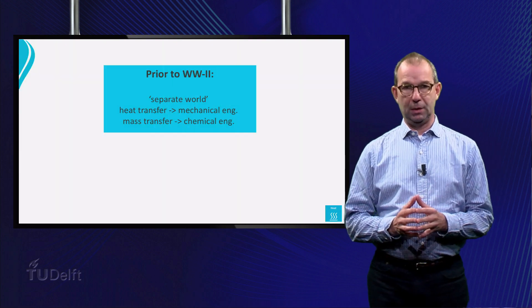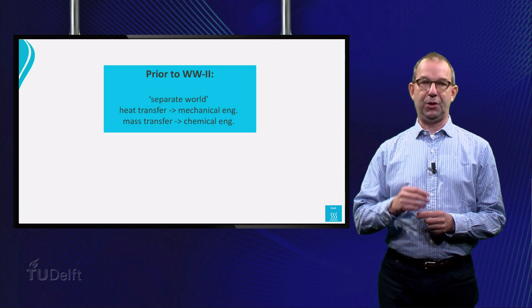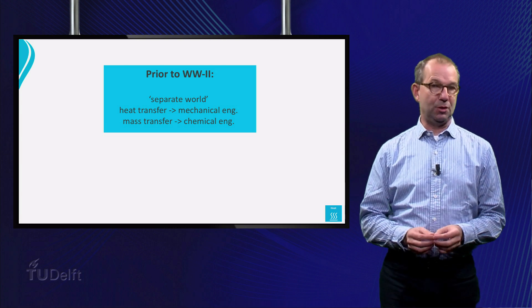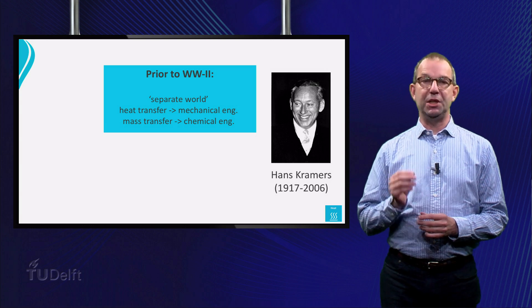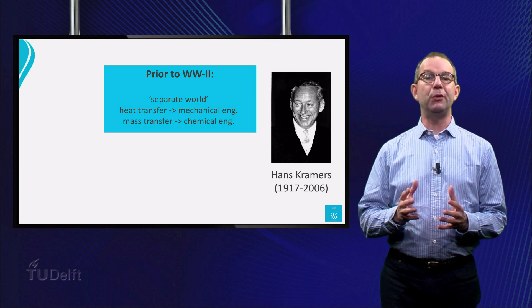Prior to World War II, heat and mass transfer were separate domains, with heat transfer part of mechanical engineering and mass transfer of chemical engineering. After the war, when the oil and chemical industry started to grow quickly, unification started.